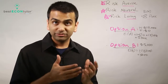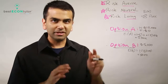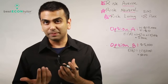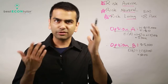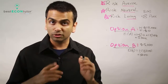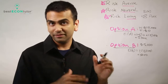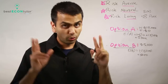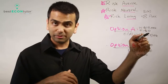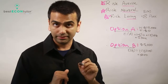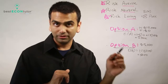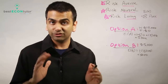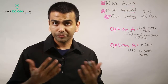When two options have different expected values and someone picks the higher one, you can't tell their risk profile. But when two options have the exact same expected value, you can definitively tell: the person who picks the riskier option is risk loving, and the person who picks the safer option is risk averse.